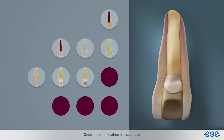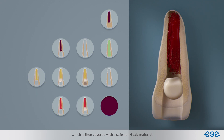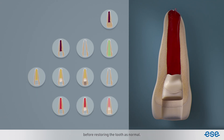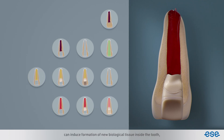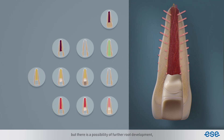Once the inflammation has subsided, your dentist will gently encourage a healthy blood clot to form in the root canal, which is then covered with a safe non-toxic material before restoring the tooth as normal. The blood clot inside the tooth can induce formation of new biological tissue inside the tooth, repopulating the space which was originally filled by the dental pulp. The newly formed tissue may not be exactly the same as the original pulp, but there is a possibility of further root development.